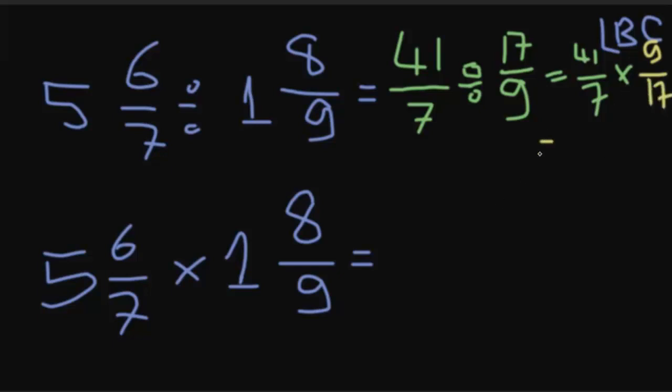After that, easy to do. We can do like this: 41 and 9, over 7 and 17. Easy. So equal what? 41 and 9, yes.